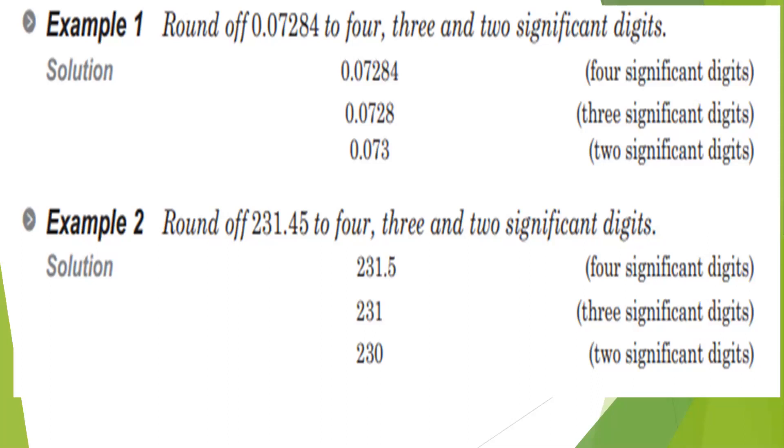How many significant figures are there in 231.45? Five significant figures. For 4 significant figures, check the last digit. If it is more than 5, add 1 to the previous digit. If less than 5, leave it. If it is 5, it depends on the previous digit. If the previous digit is even, leave. If odd, add 1. The answer is 231.4.